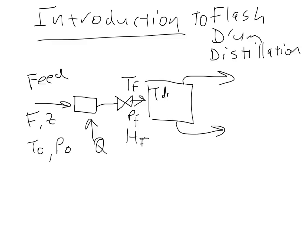And then we have T drum, P drum, or the pressure and temperature of the drum, and then it comes out and leaves with a flow rate L and V, where V is the vapor flow rate and L is the liquid flow rate. The mole fraction of the more volatile component is Y in the vapor and X in the liquid, with enthalpies HV and HL. That's the typical setup we have here.